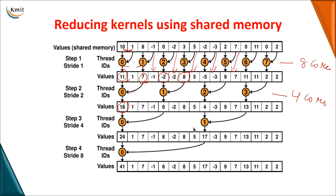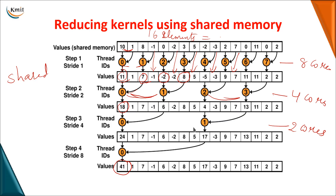Moving to the next step, with 4 core elements I sum pairs of values, requiring only 2 cores. Finally, summing 24 and 17 gives the result — you only need to look at the last value. The summation is the addition of all elements, and you can verify manually with all 16 elements. The main advantage here is that shared memory takes less time to store intermediate results compared to global memory.